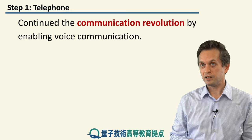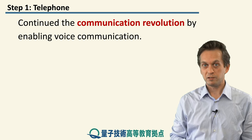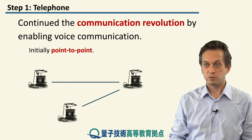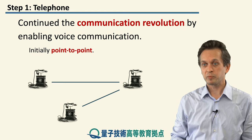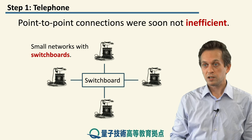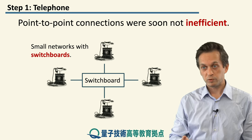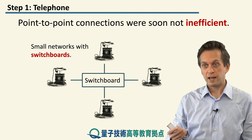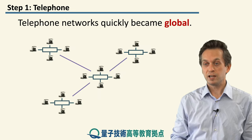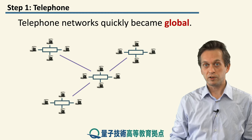The electrical telegraph then gave way to the telephone, which implemented the dream of transmitting human voice. At first, connections were point to point, but as the telephone's popularity grew, more connections were required and networks grew larger. The solution was to build a switchboard to which all telephones were connected — you'd call the switchboard, which would connect you to your desired recipient. Eventually, as more people used telephones, different networks became interconnected, creating the first global network.